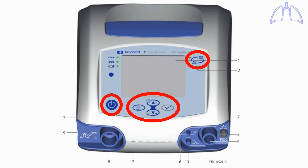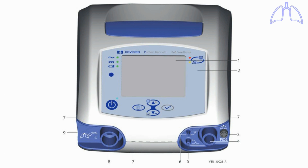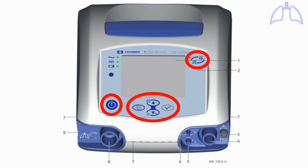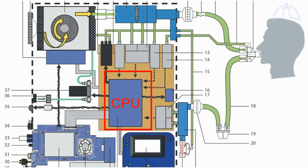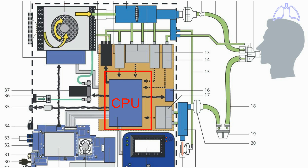The user can send data to the CPU via these buttons. The CPU processes the received data according to the instructions of the software program, then it sends output electric signals to the actuators.